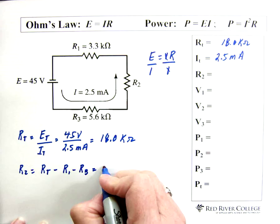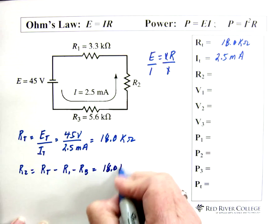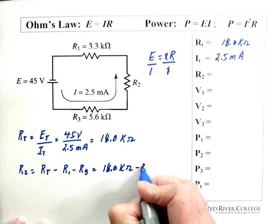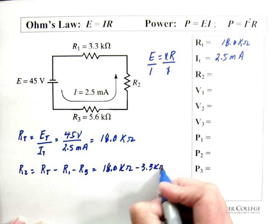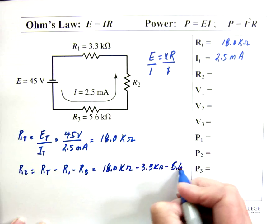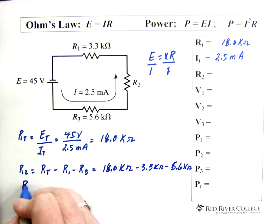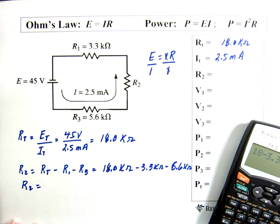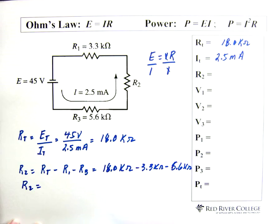So we end up with 18 kilohms for our total, minus these two, which is minus 3.3 kilohms, minus 5.6 kilohms. Since they're all kilohms, I'm just going to put the 18 minus the 3.3 minus the 5.6.